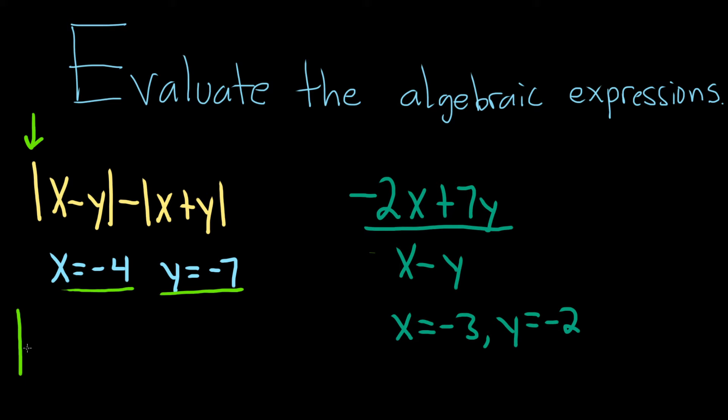So we have the absolute value of negative 4 minus, and then y is negative so it'll be negative 7. You can change it into a plus, you can skip steps, you know minus and minus is plus, but I'll just show all the work.